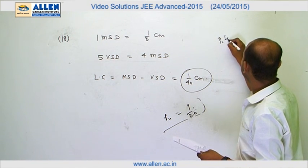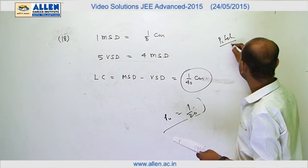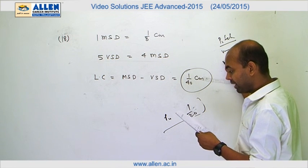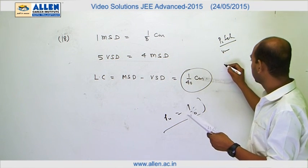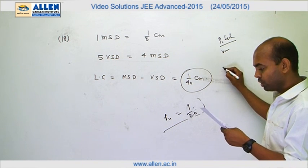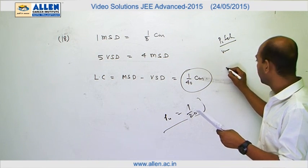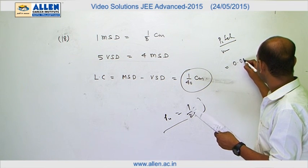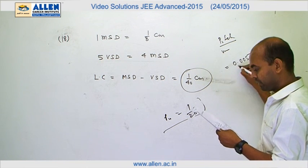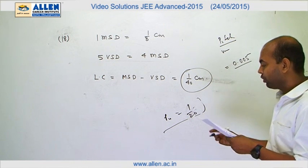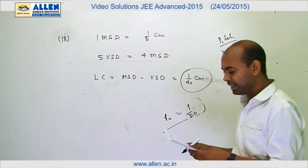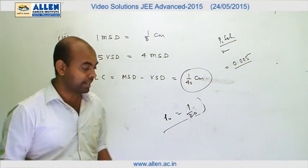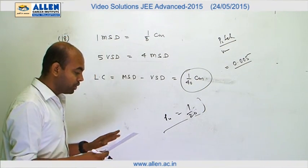The least count of the screw gauge is pitch divided by the number of circular scale divisions, which is 100 as given in the question. So the answer comes out to 0.005 centimeter for options A and B.